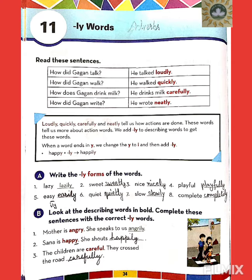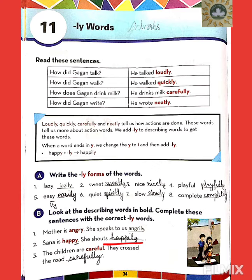Number 1: Mother is angry. She speaks to us — angry ends in Y, so we replace Y with I-L-Y: angrily, A-N-G-R-I-L-Y. Number 2: Sana is happy — again there is Y at the end, so we add I-L-Y: happily, H-A-P-P-I-L-Y. The new sentence is: she shouts happily.